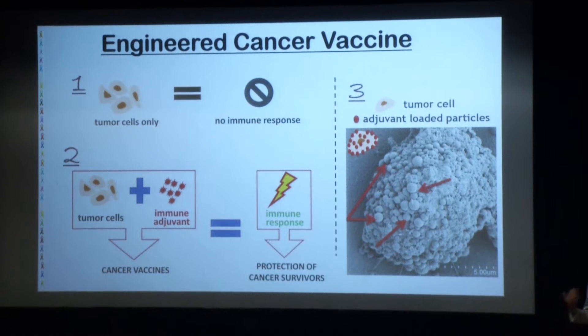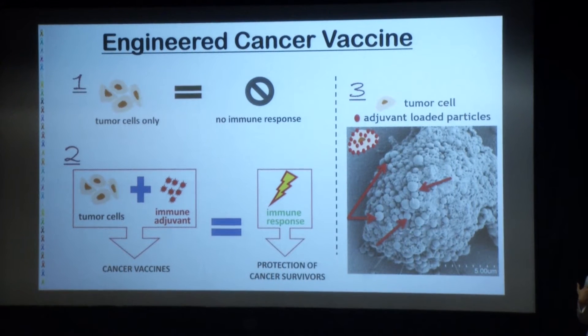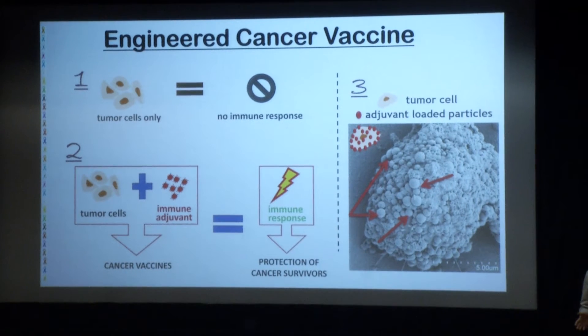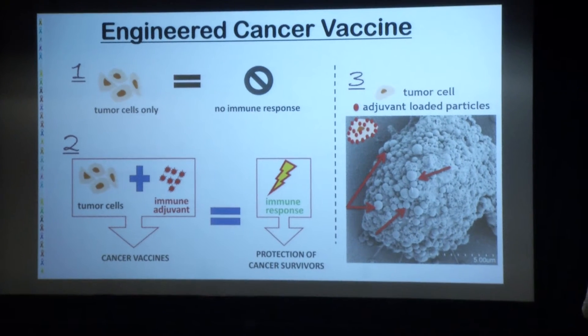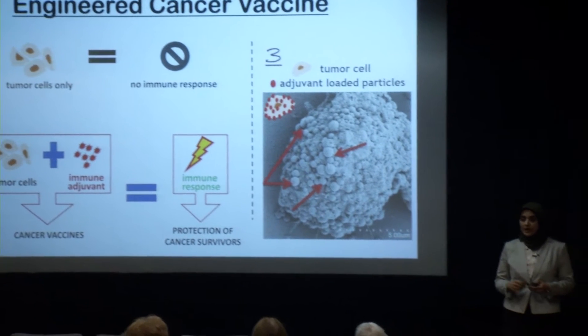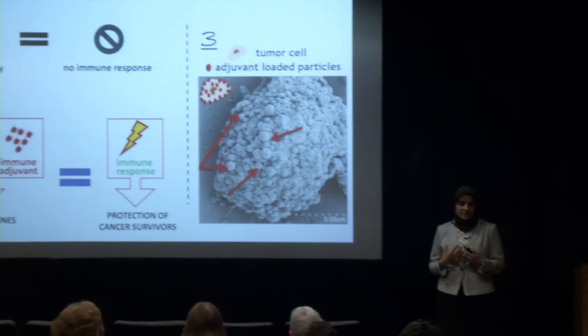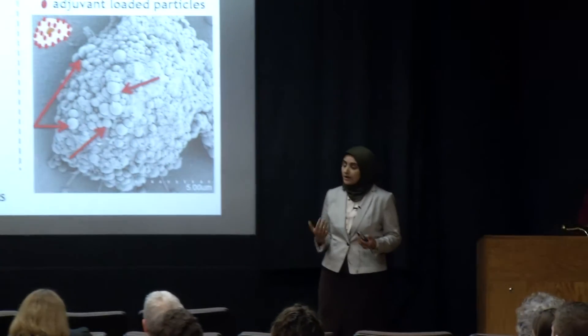Now to the exciting part, which is the cancer vaccine that I have been working on. In vaccines, we use a harmless component of the disease-causing entity to trigger the immune response. In my vaccine, I use a dying tumor cell. I'm working with prostate cancer, so I would take a prostate cancer tumor cell, radiate these cells so they are dying — they cannot form a tumor anymore — and then I surface engineer the cell, meaning I modify the surface of the cell.